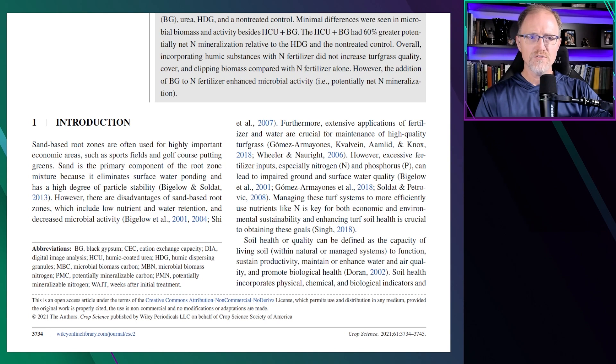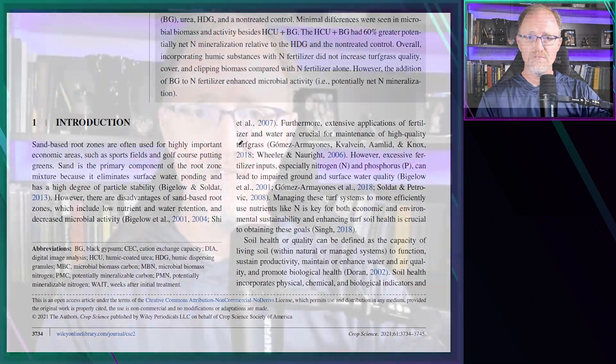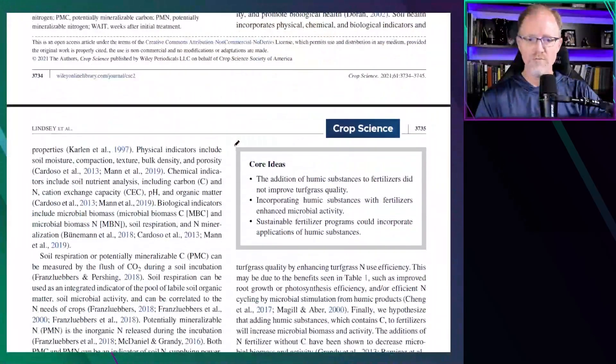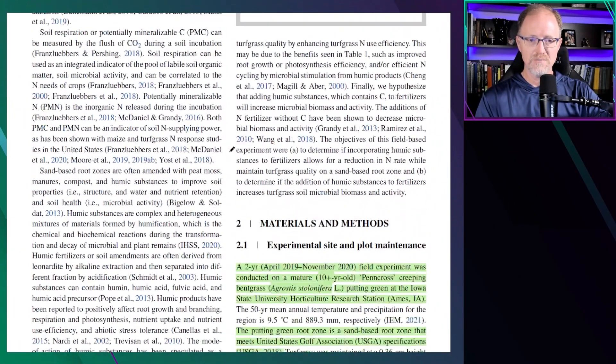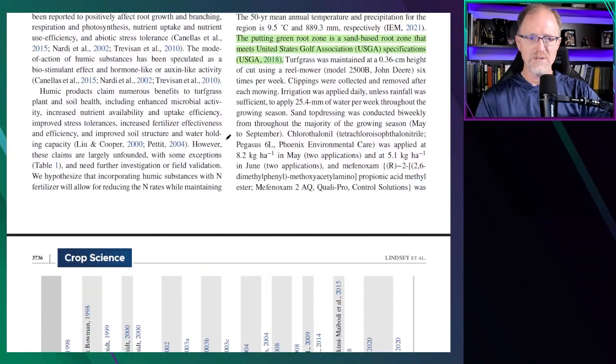Basically, the authors explain that putting greens can be difficult to grow grass on and that the nutrient and water holding capacity of these systems can be difficult. They do a brief explanation of what humic products are. Humic products claim numerous benefits to turfgrass plant and soil health including enhanced microbial activity, nutrient availability, uptake efficiency, and a number of other benefits they mentioned with some citations for that.